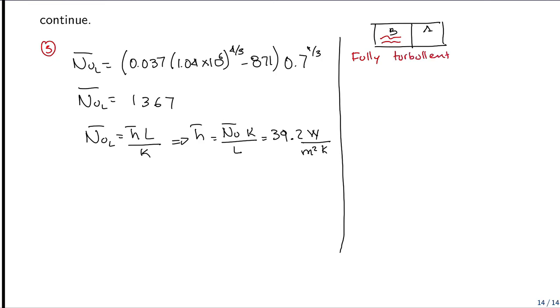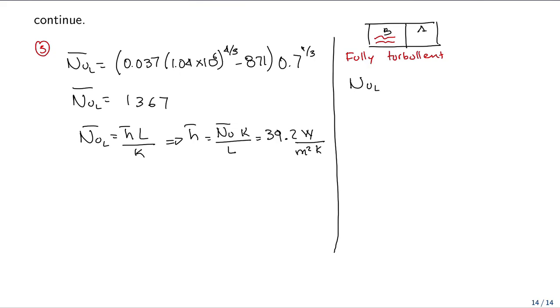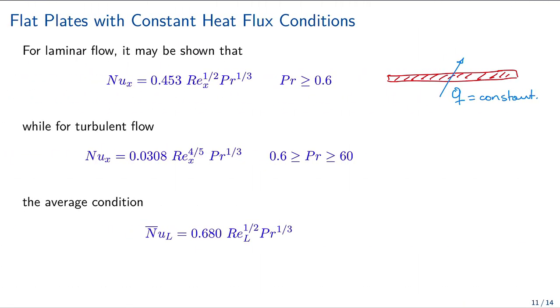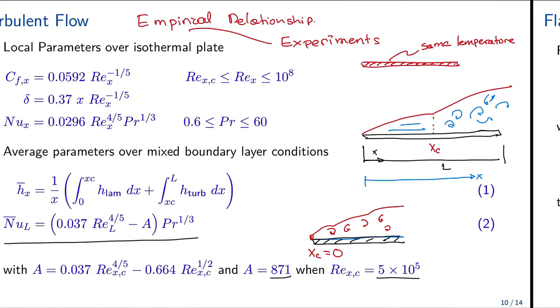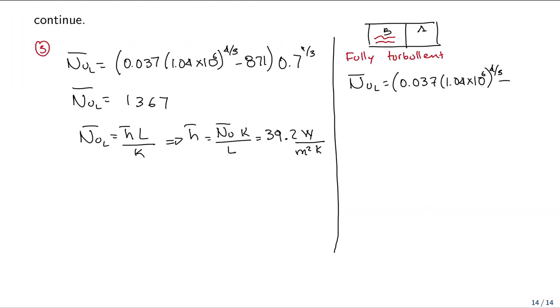So we need to use for fully turbulent Nusselt_L equal to 0.037 multiplied by 1.04 times 10 to the sixth to the fourth fifth minus A. Let me go back to the equation. We have the value for A, and A is given by the Reynolds at the critical point. Where is the critical point? In the second case, the turbulence is here, here. So the x_c in this case...